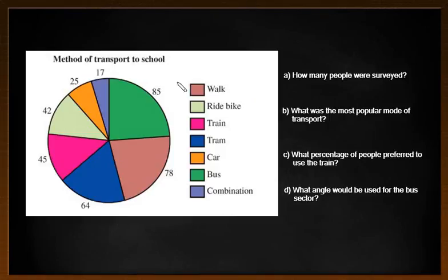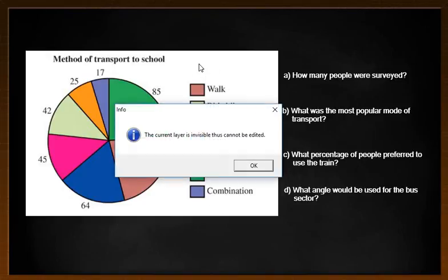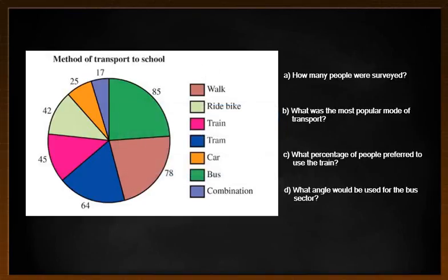Okay, welcome back guys. So how did you go with these answers? The first one is pretty straightforward. You can see this is for the best method of transport to school. Hopefully you remember that this little bar corner here is often referred to as a key. So that's my key. How many people were surveyed? Well, I'm simply adding 85, 78, 64, 45, 42, 25, and 17 to get a total of 356 people were surveyed.